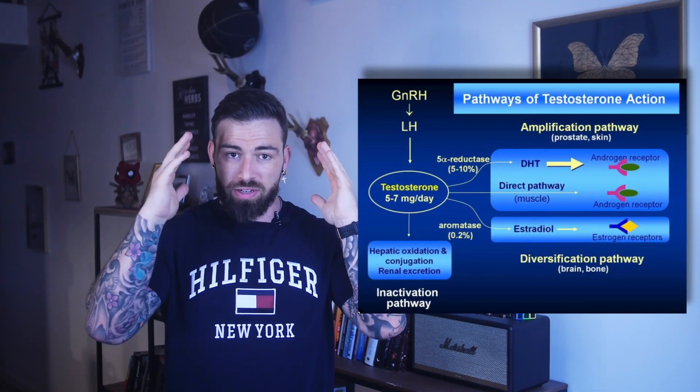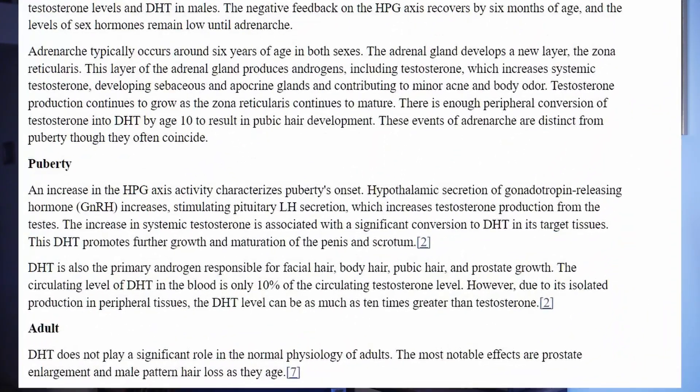So we take the 5-AR enzyme, add it to testosterone, and we get DHT. DHT is responsible for a lot of good things during our teens. But what is DHT's job after our teenage years? According to the National Institutes of Health: 'DHT does not play a significant role in the normal physiology of adults. The most notable effects are prostate enlargement and male pattern hair loss with age.' I would agree to a large extent. I also have videos on DHT, and I'd like to encourage you to visit a YouTuber named Kevin Mann's channel.